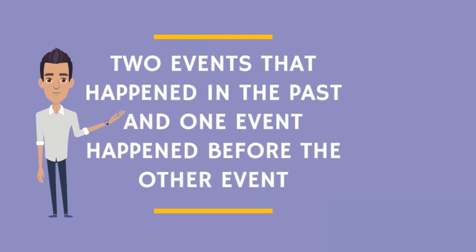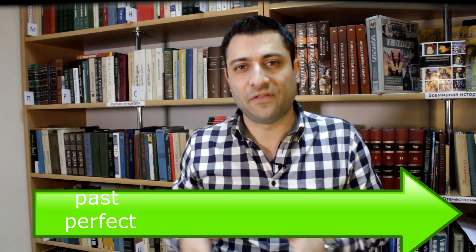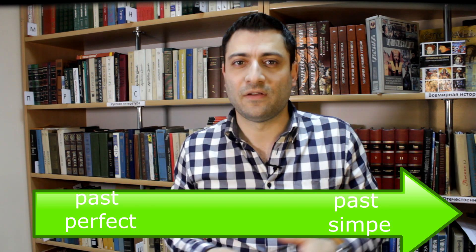We use the past perfect to talk about the past, but not just any situation in the past. We use the past perfect when we are talking about two events that happened in the past, and one event happened before the other event. It helps you to order the actions in your story. Think about the past perfect as helping us to create the timeline. The past perfect shows the earlier action, and the past simple shows the later action.